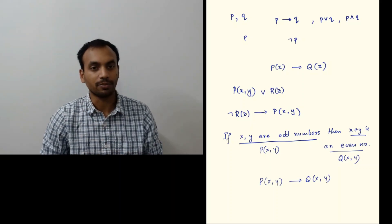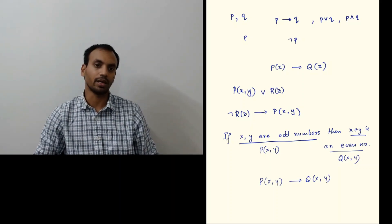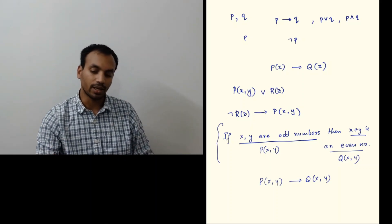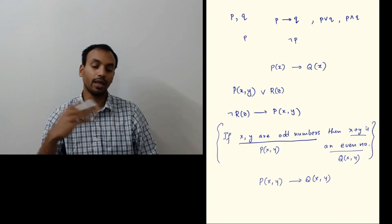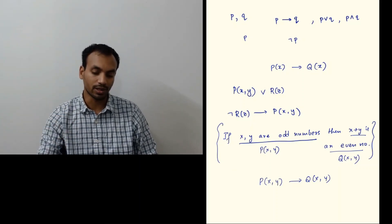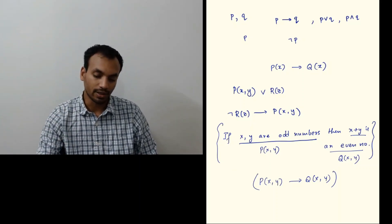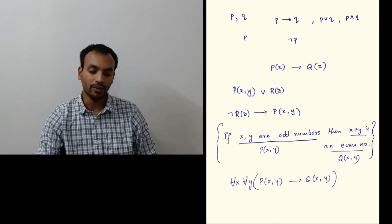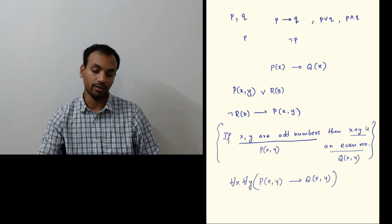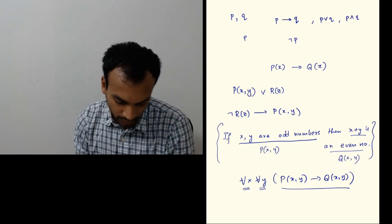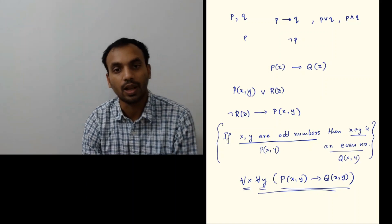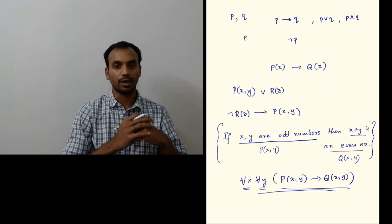Often in mathematics you don't just use predicates — you want to use quantifiers with them. For example, with this statement you want to say: for all integers X and Y, if X and Y are odd numbers then X plus Y is an even number. So you're saying for all X, for all Y (where the domain of X and Y are integers), P(X,Y) implies Q(X,Y).